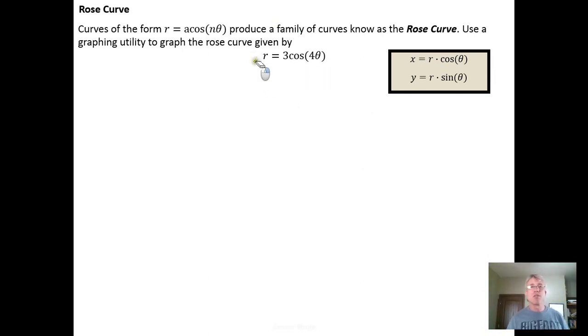Here's the way that this would work. I've got a polar equation right here and what I'm going to do is parameterize it. From our trigonometric relationships we know that x equals r times the cosine of theta.